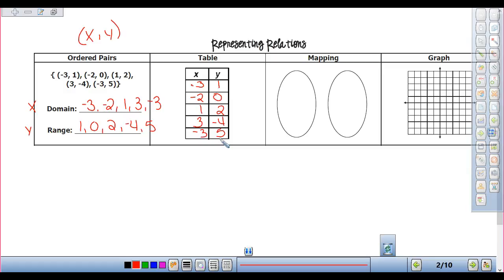A mapping. A mapping, we don't repeat any of my numbers. So if I start with negative 3, I'm going negative 3, negative 2, 1, 3. And do I already have a negative 3 on there? So I don't write that again. And then over here, I'm going to write my y's, but don't repeat any of them. So 1, 0, 2, negative 4, and 5. I don't have any repeating.